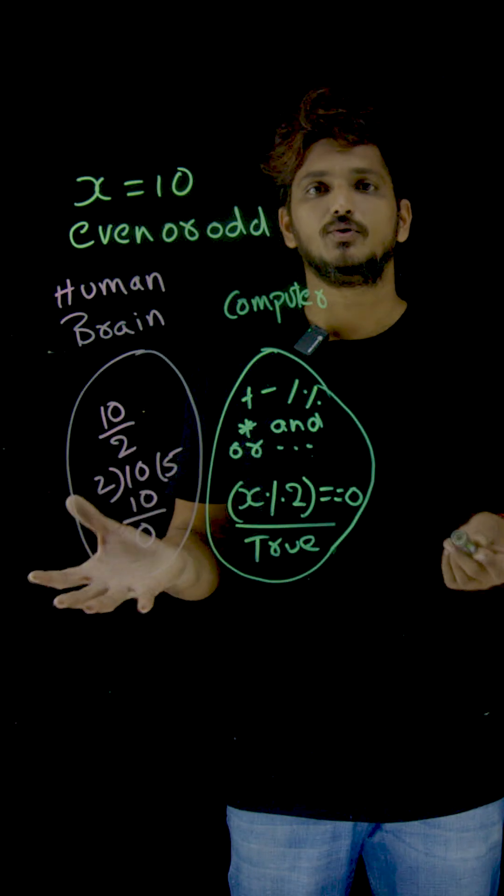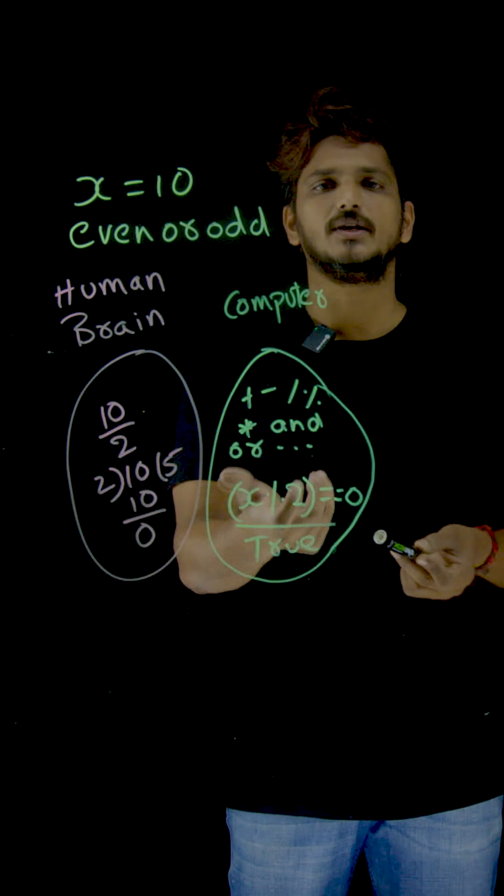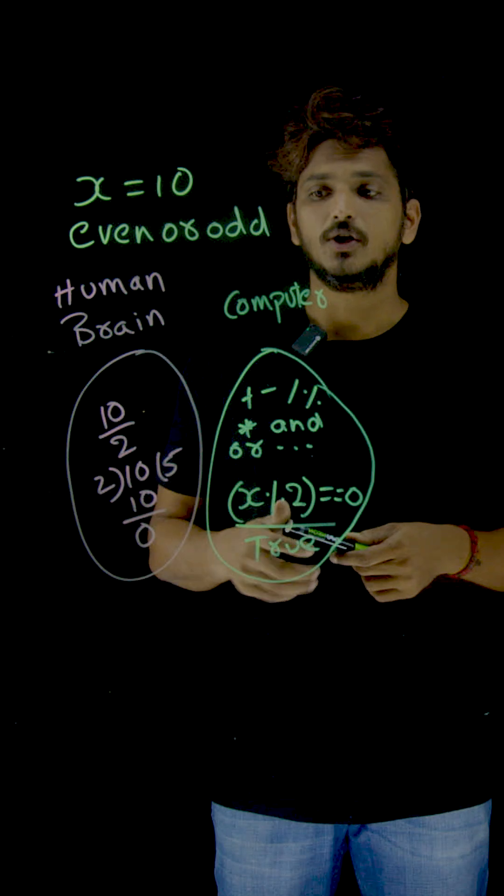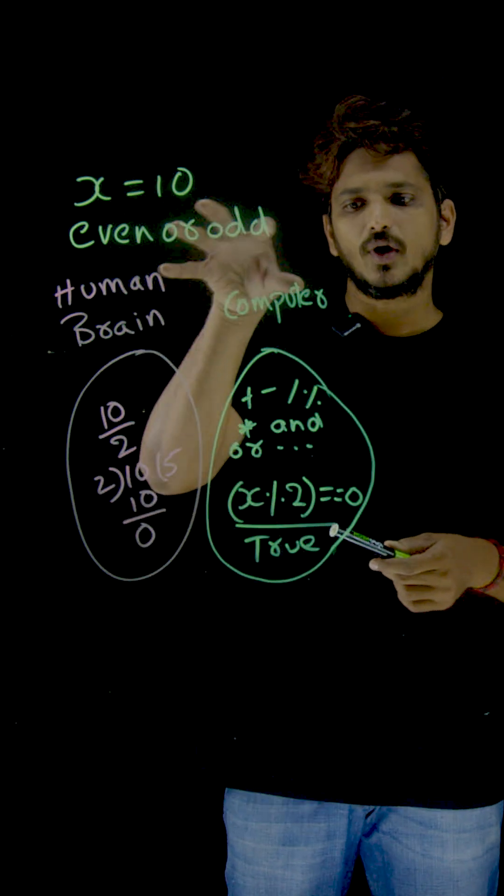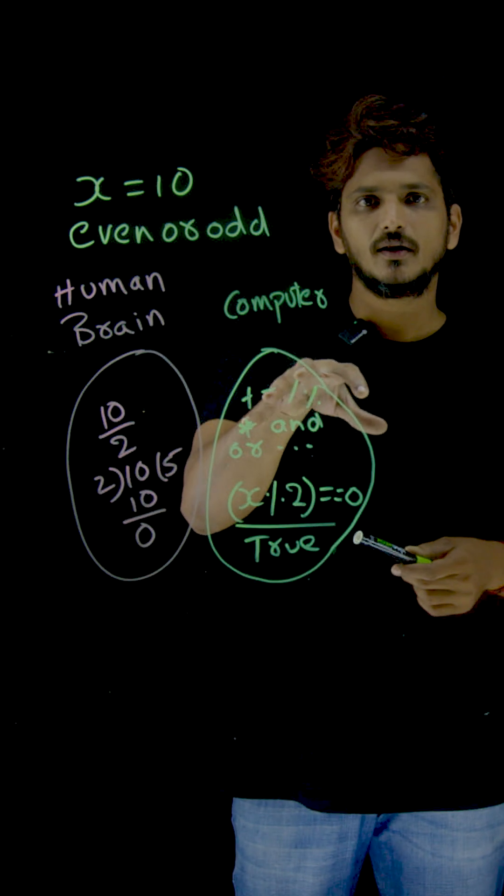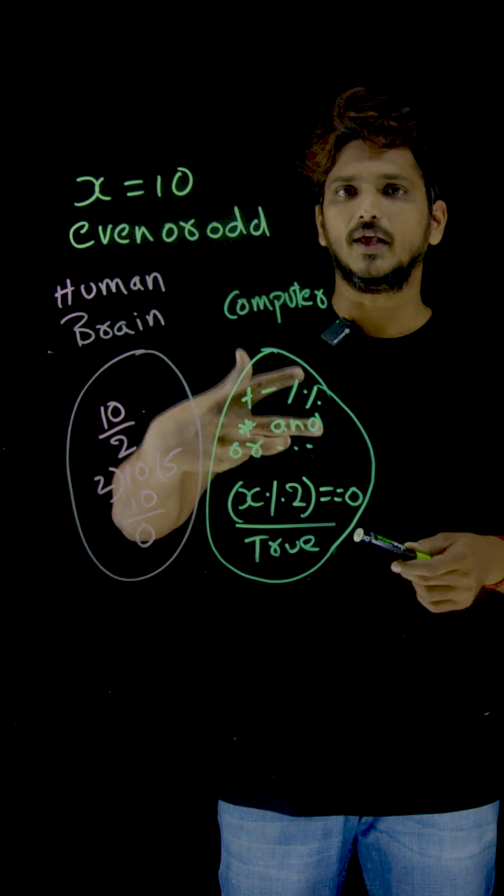It's an even number. You can say that if you got true, you can say it's an even number. So whatever you did here, you exactly put it here. Slowly you are going to understand how to write coding.